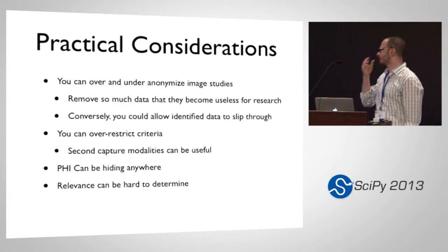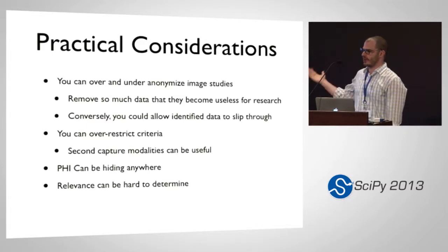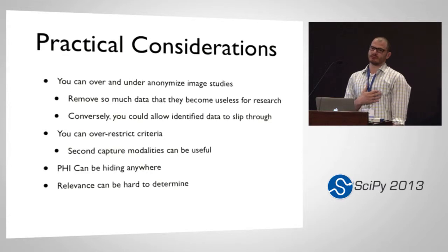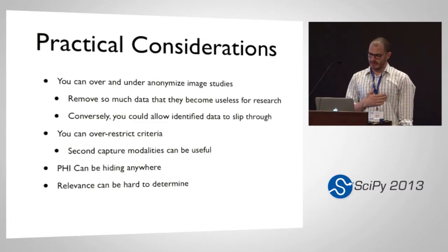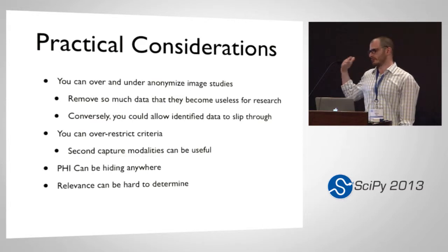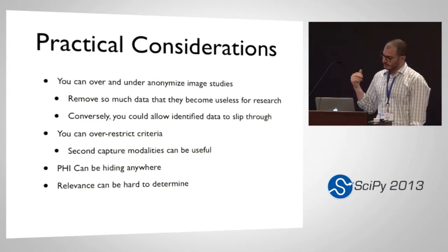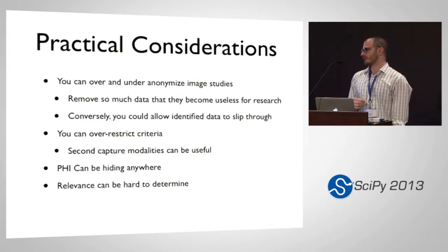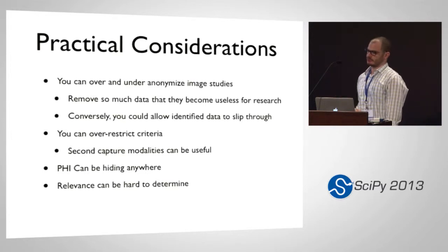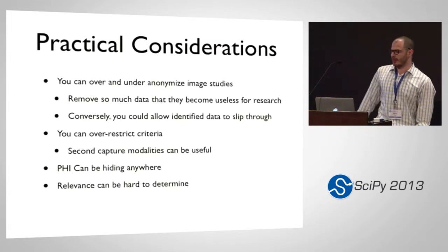Some of the practical considerations when anonymizing these files is that you can both under and over anonymize images when you want them to be used downstream for research. Over anonymization would be if you were to remove everything except the image. If you showed that to a researcher down the line, they wouldn't be able to see what the study description was — so if it was an image of a cochlear nerve, they wouldn't know that. If you remove other metadata, you won't be able to do things like measurements; people will want to do a length or area measurement in a DICOM viewer, and if you take out the pixel data you won't be able to do that. Conversely, if you under anonymize, you'll allow identified data to slip through.